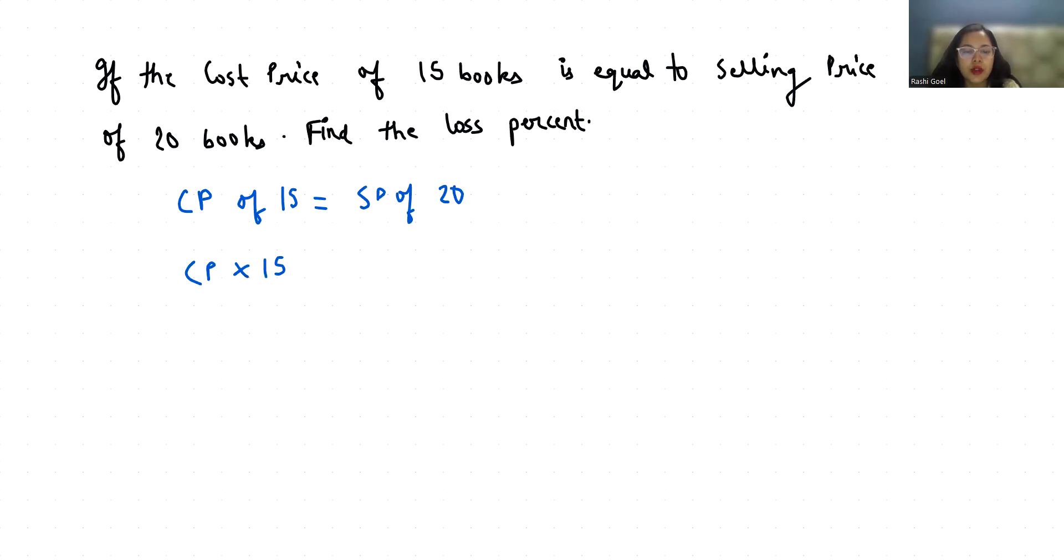Now I'm going to divide both sides by SP times 15. We can cancel this out, so CP by SP is equals to 20 by 15. So we can say that CP is 20 and SP is 15.